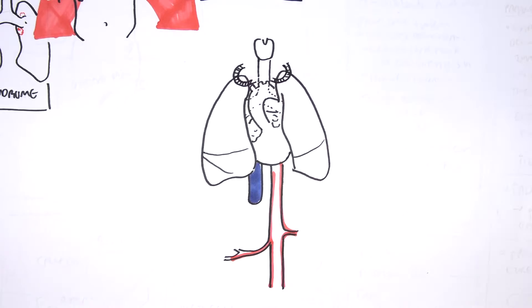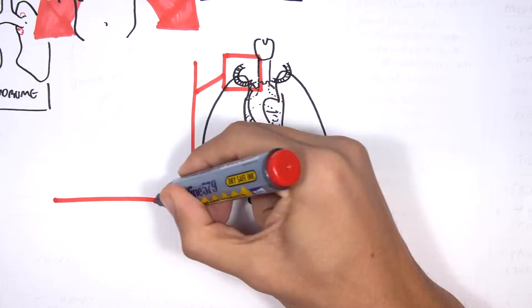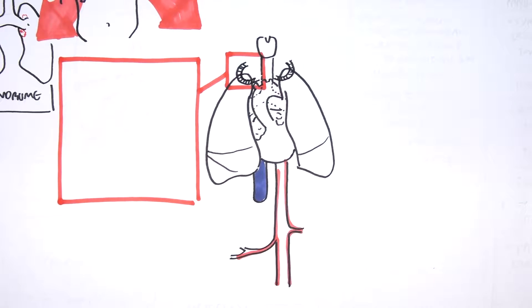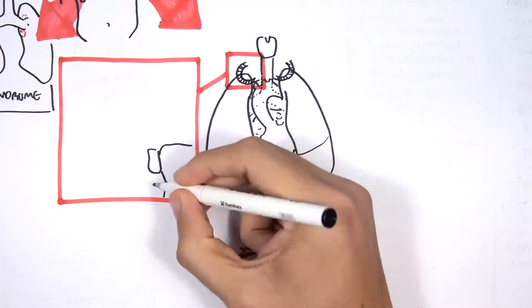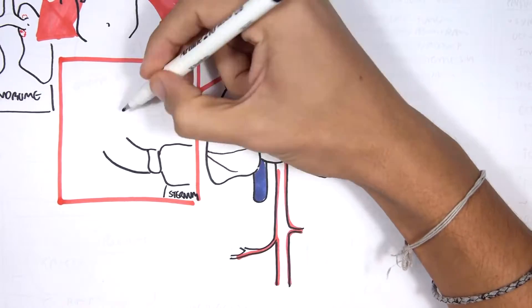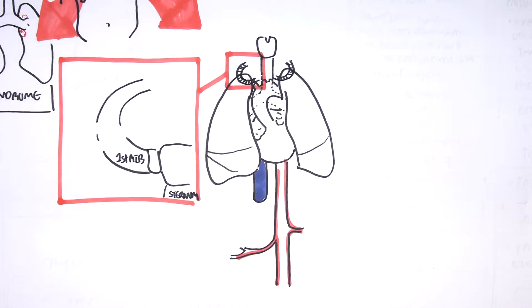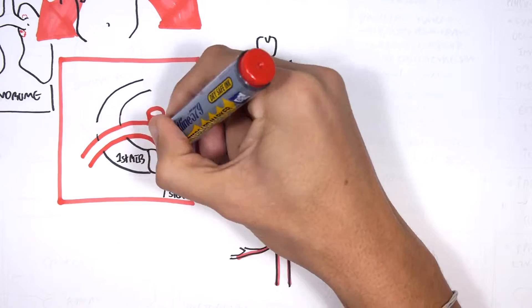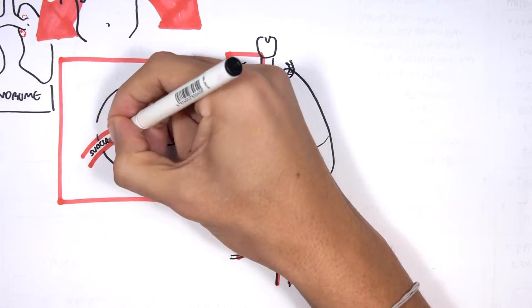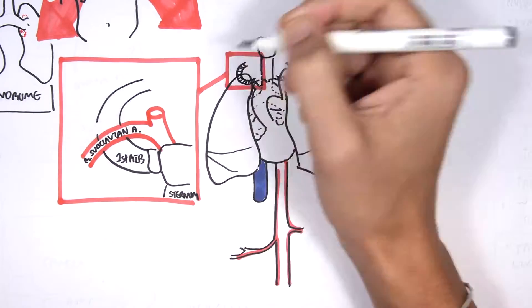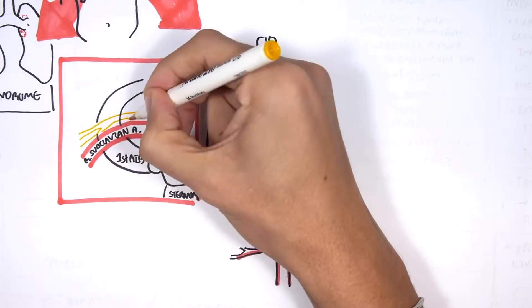Let us zoom into this first rib area and learn a bit of anatomy. So here is the sternum and the first rib. Now, going over the first rib are some important structures, including the subclavian artery and vein and the brachial plexus, the nerves that innervate the upper limb.